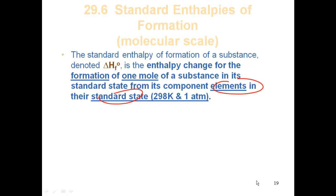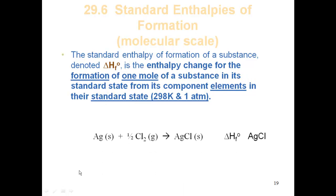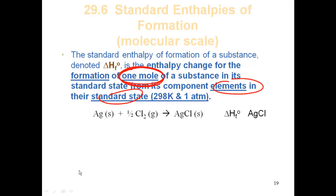They're going to have to react that with chlorine. Well, how is chlorine at elemental state at room temperature? Well, it's a gas. But what else do we know about chlorine? Well, it's diatomic. So at room temperature, we know it's Cl₂ as a gas. I now need to take those two, react them, and form silver chloride. But the other part of this definition that's important is by definition, we're only forming one mole of the substance. So when I balance the equation, I have to make sure that I only have one mole of silver chloride.